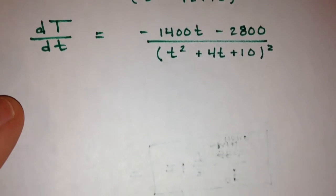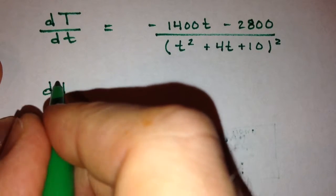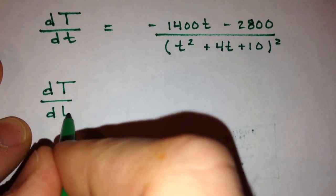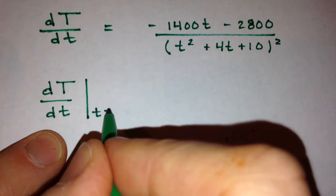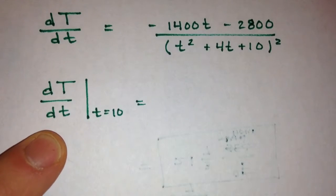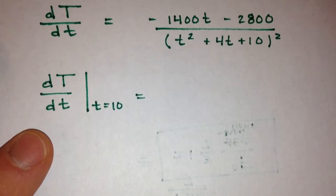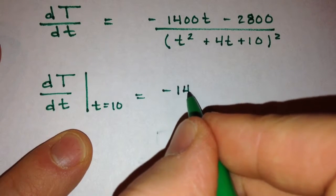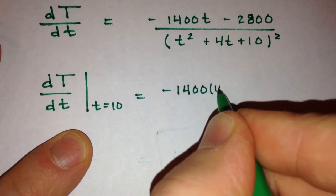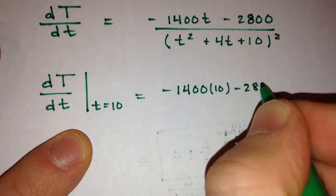Now the problem asks us for some specifics. And I'm just going to do one of the times. It says, at time 10, which would be 10 hours after the refrigerator starts running, what is the rate of change?